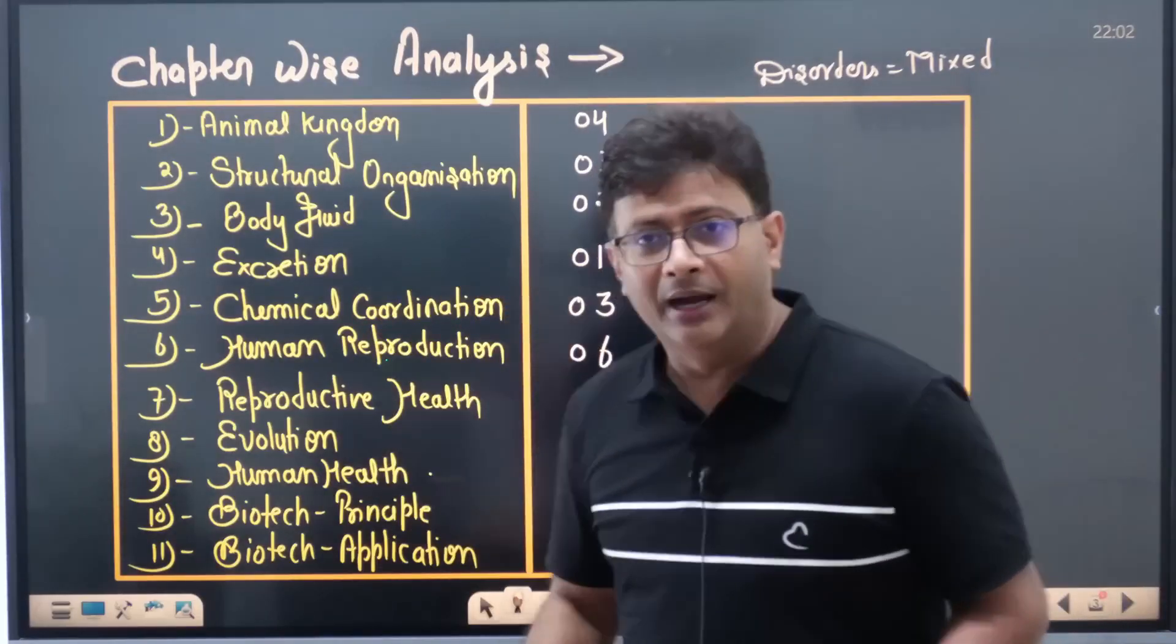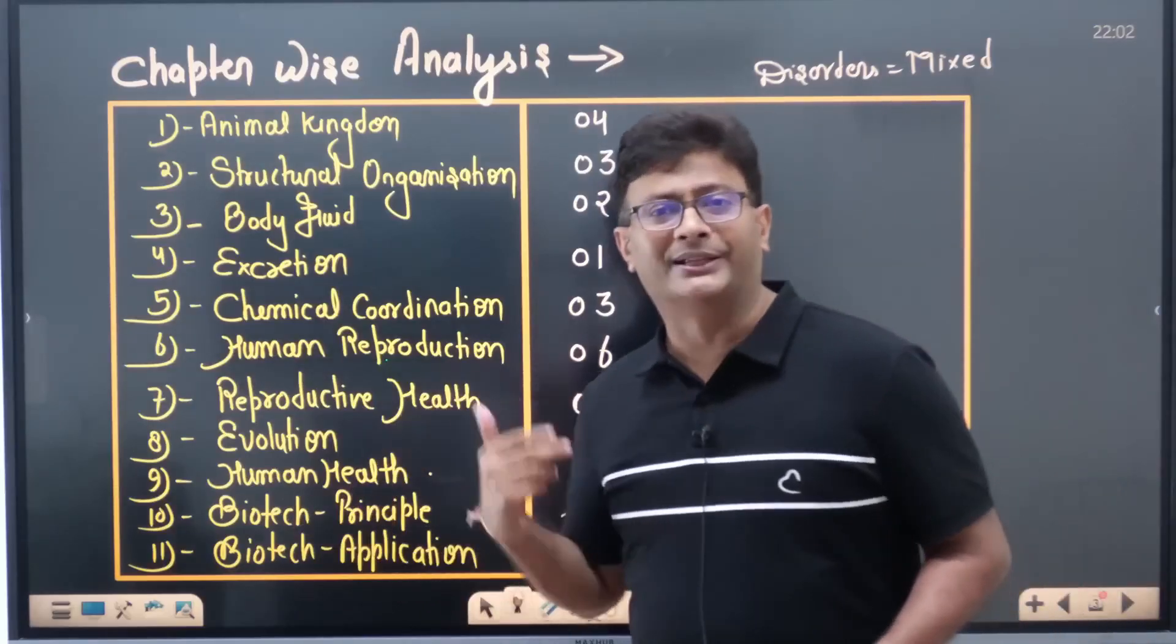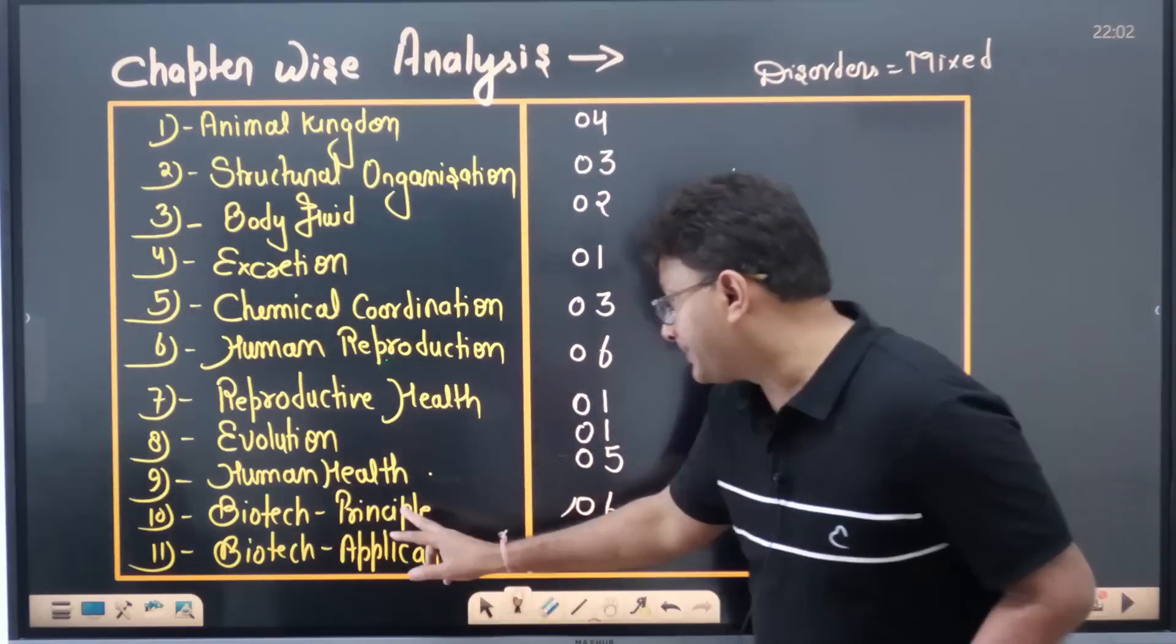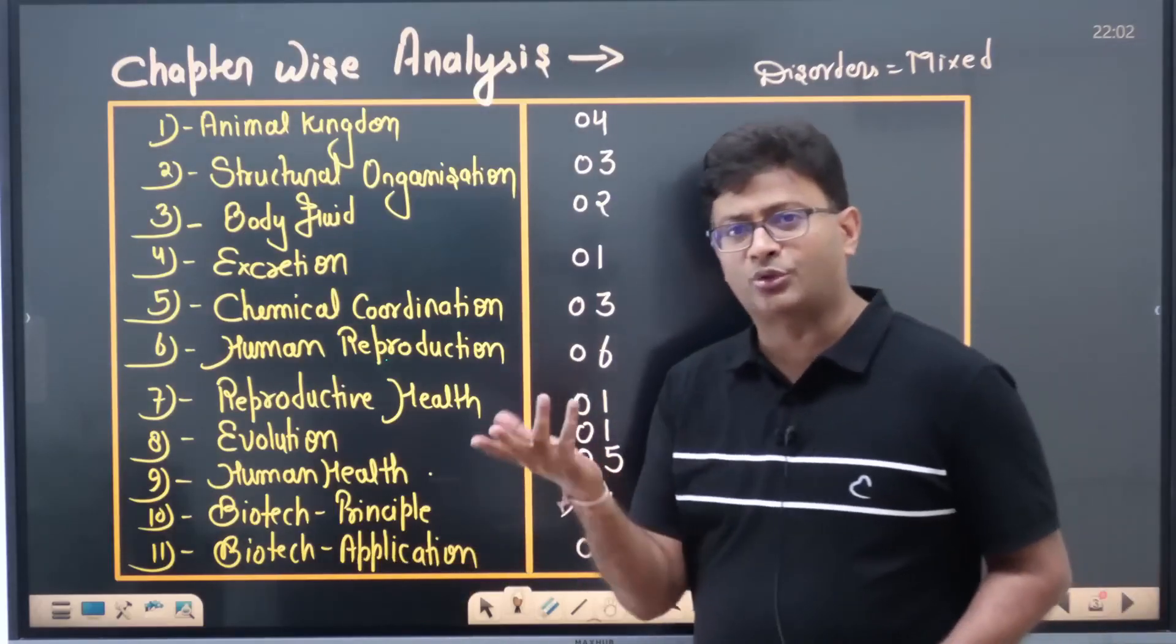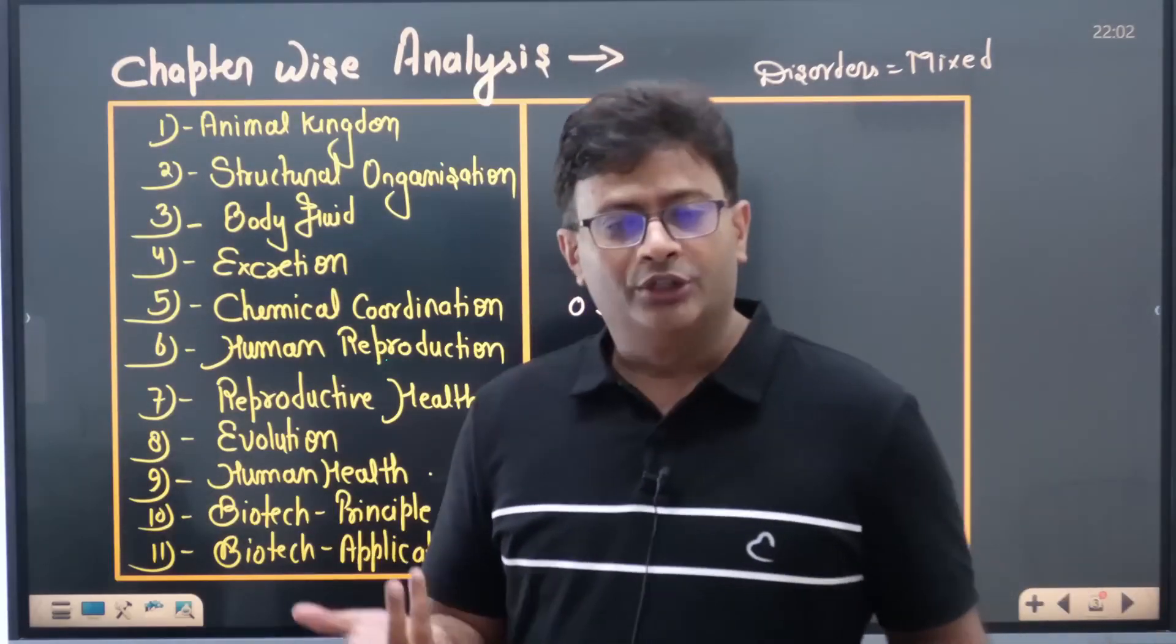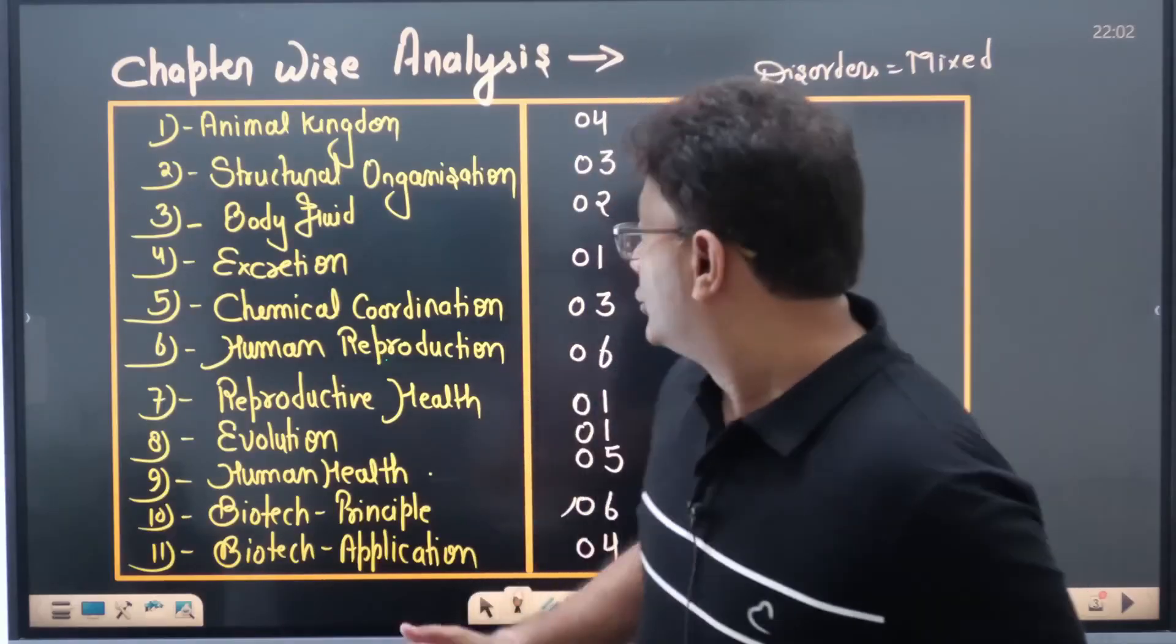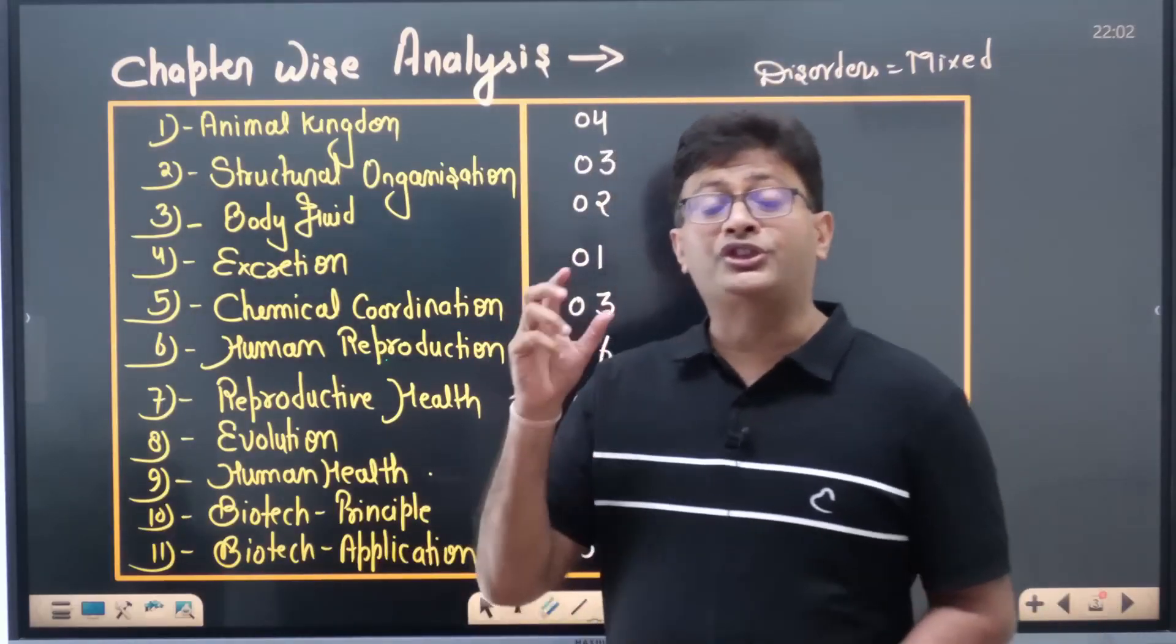If you look at human health, five questions came. Now the topics we discussed in the five questions are almost repeated. Yes, this time they have added two questions from cancer. Let me talk about biotech principles: six questions have come and four questions have come from application. So we were carrying almost 10 questions. We have got 10 questions this time also.